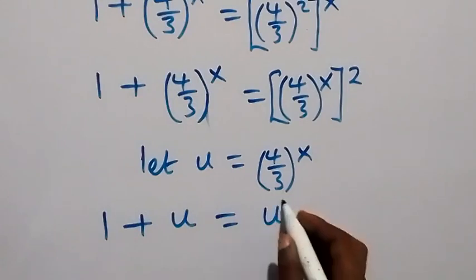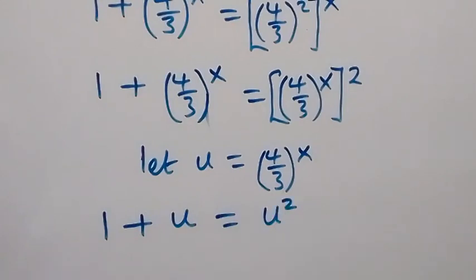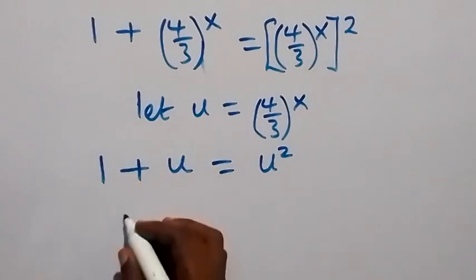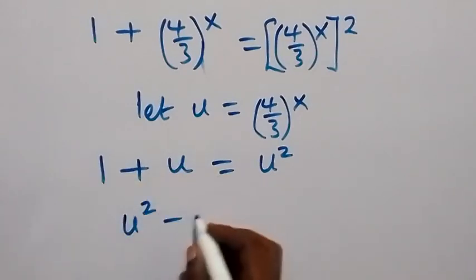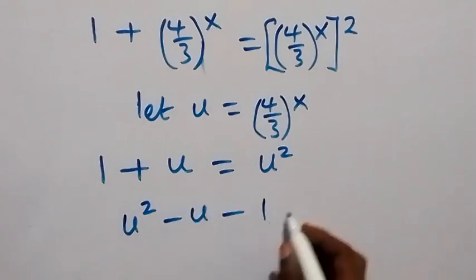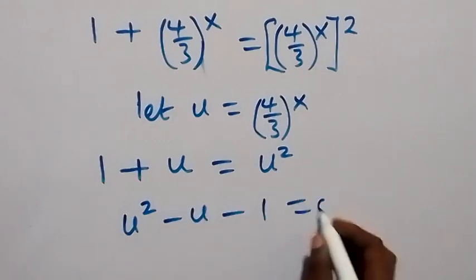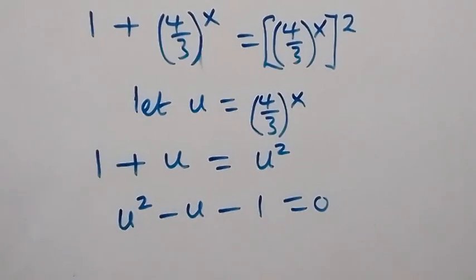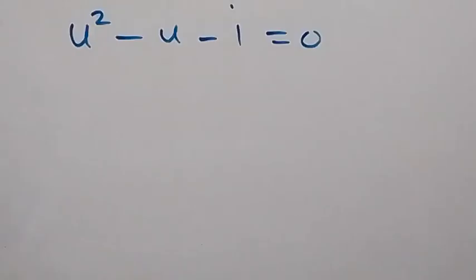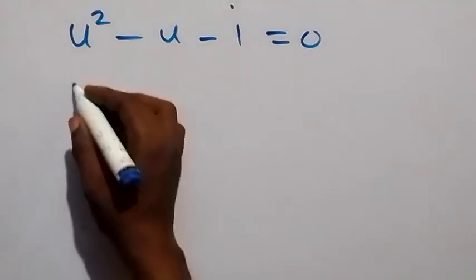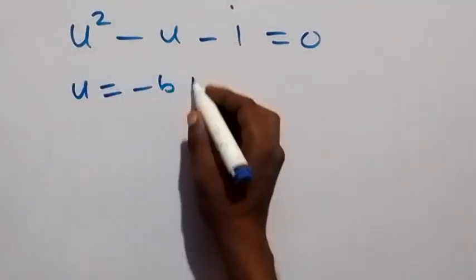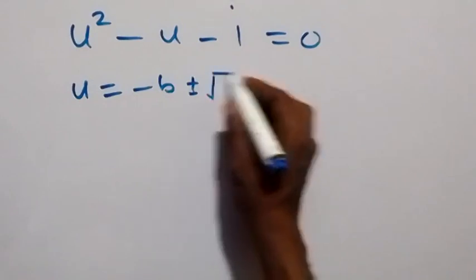With the substitution u = (4/3)^x, we can write the equation as 1 plus u equals u squared. Taking everything to one side, we get u squared minus u minus 1 equals 0, which is a quadratic equation.